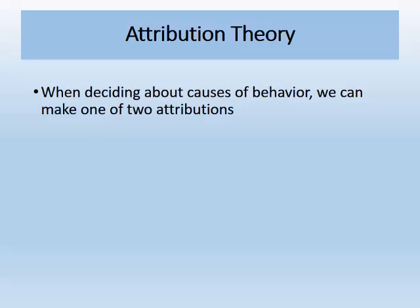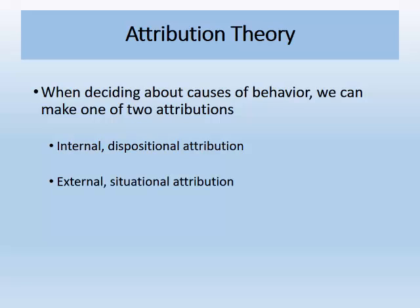Heider proposed a simple dichotomy for people's attributions. He argued that we either form internal attributions, in which people infer that a person is behaving a certain way because of something about that person, such as a trait or attitude, or we form external attributions, in which people infer that a person is behaving in a certain way because of the situation that he or she is in.